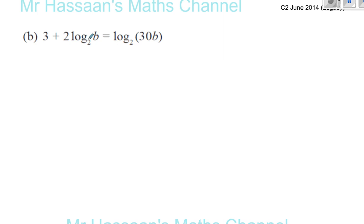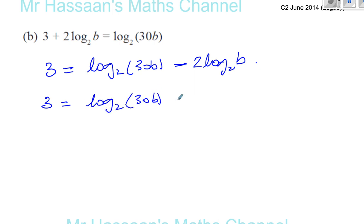So when you have a situation like this, where you have log to the same base in different terms, what I want to do is you want to bring them together on one side of the equation. What I can do here is I can say, okay, 3 equals log to the base 2 of 30B minus 2 log to the base 2 of B. Now, before I can combine these two together, I have to get rid of this 2. I can use the power law to do so.